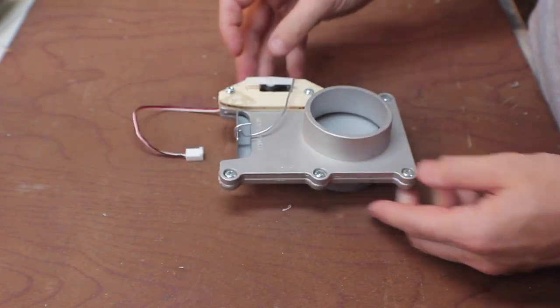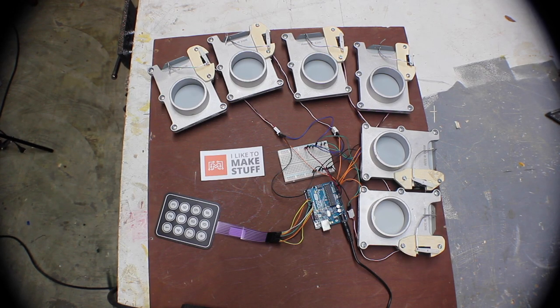Now the servo activates the gate. Then you do the same for the rest of your blast gates. Once it's all hooked up, this is how it works.